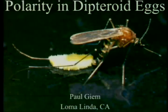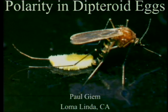Polarity and dipteroid eggs. For those of you who don't know, dipteroids are insects with two wings instead of four. That includes mosquitoes and flies. It would not include dragonflies, which have four wings.